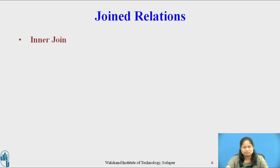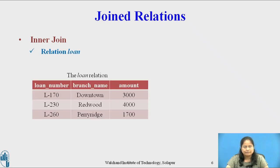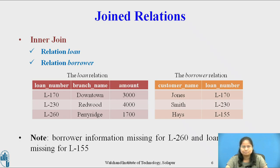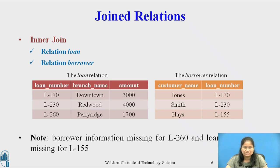Consider the relations for the queries on the inner join. Relation loan has attributes loan number, branch name, and amount. Relation borrower has attributes customer name and loan number. In both relations, the common attribute is loan number. Borrower information is missing for L260 in the borrower relation, and loan information is missing for L155 in the loan relation.